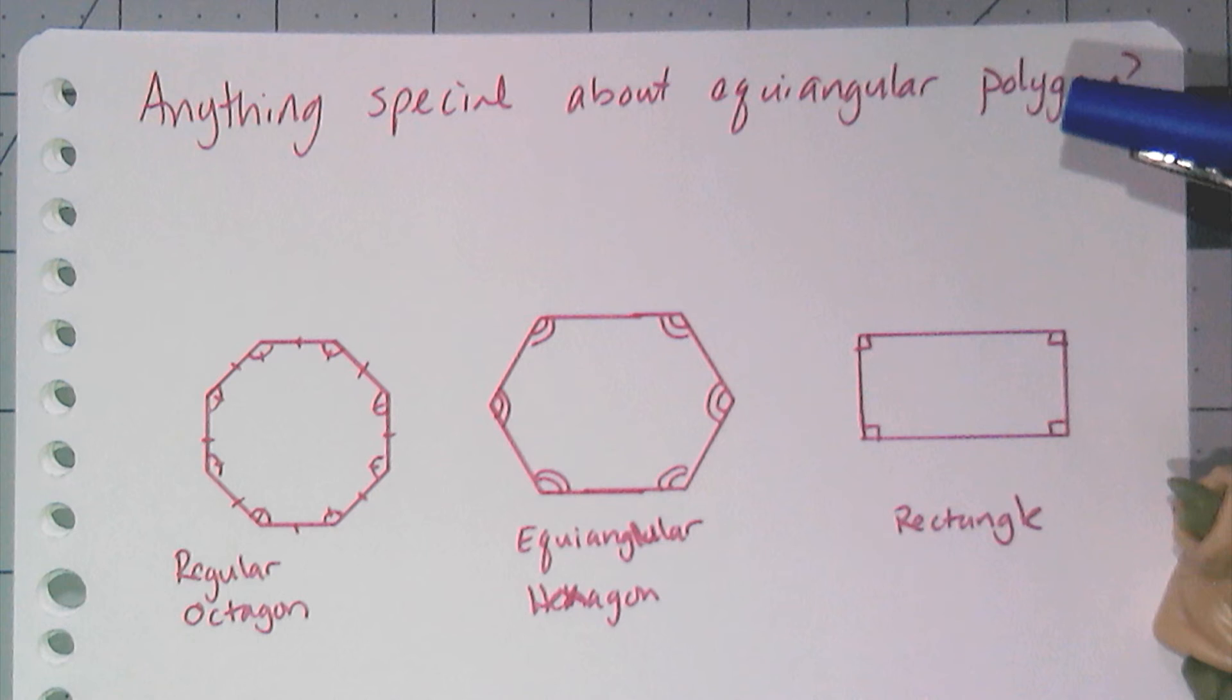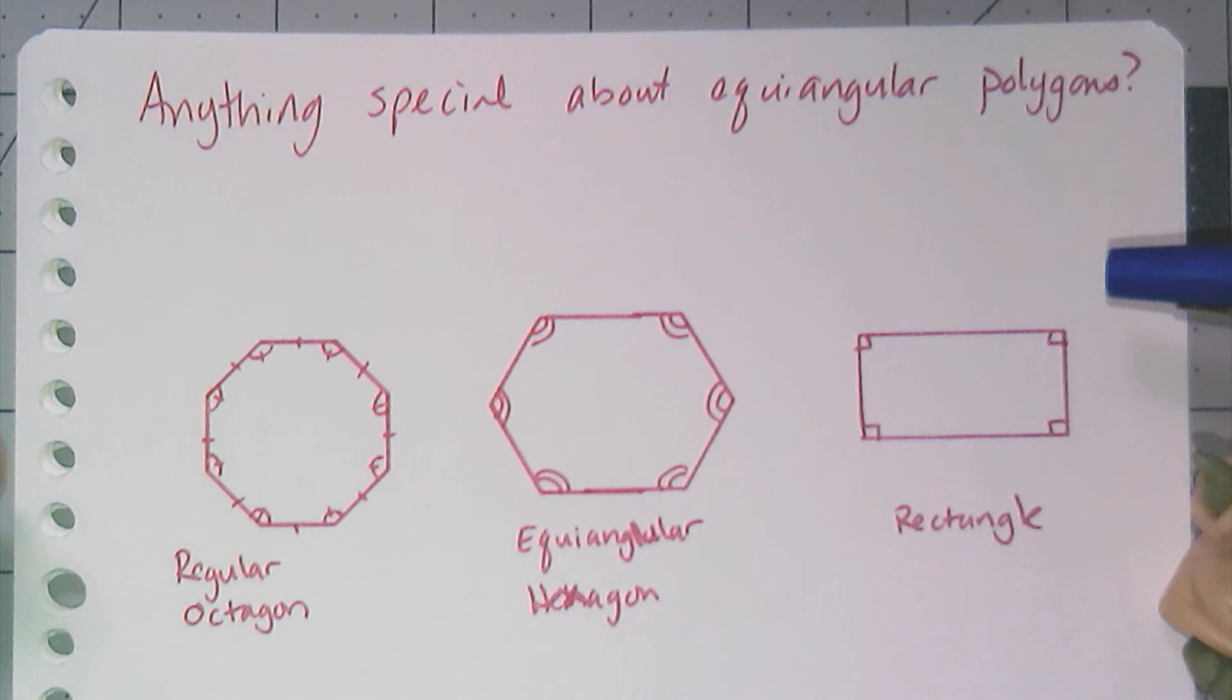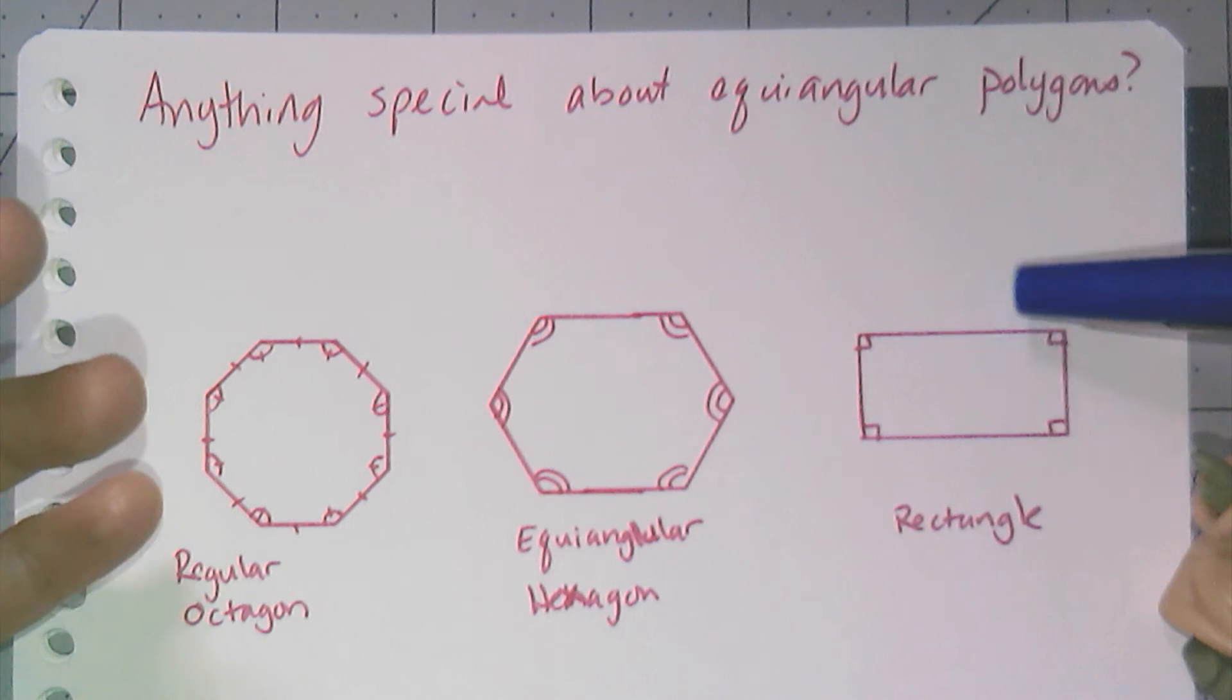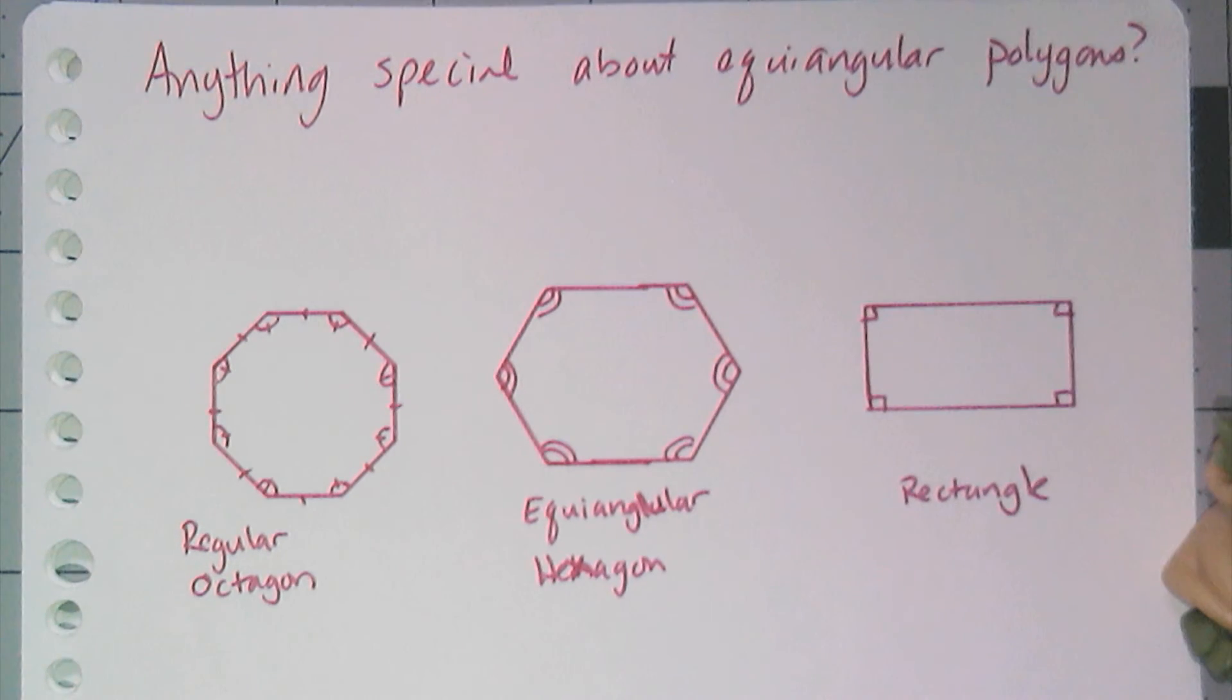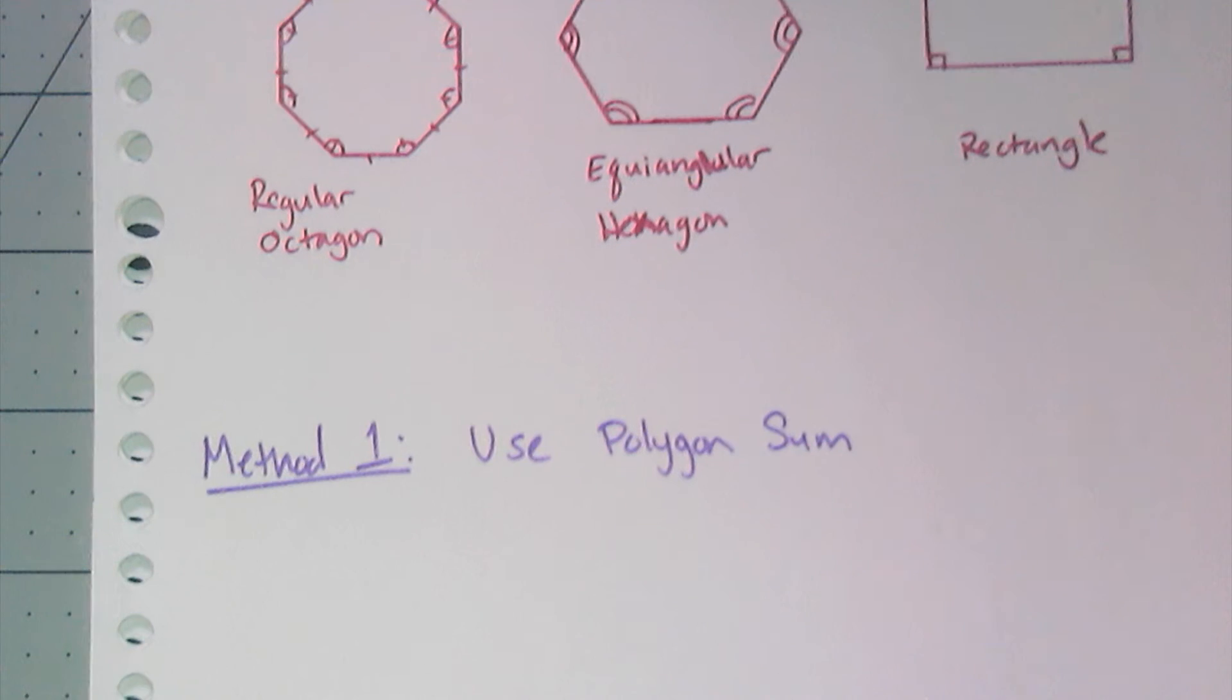And so, actually rectangle is a good way to start here. So, if they're equiangular, and I know the sum of the interior angles, then I know the measure of each of the individual angles. And so there's two quick ways of doing this, which give us formulas.